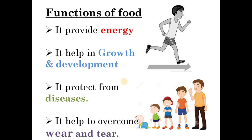Food provides energy to our body. Some food items that we eat — including carbohydrates and fats — provide energy required for various kinds of work and activities. Food also helps in growth and development. Protein helps in growth and development of body cells. Vitamins and minerals protect our body against many diseases. Deficiency of vitamins and minerals leads to deficiency diseases. Food also helps to overcome wear and tear — it helps in repairing damaged cells, replacing worn-out tissue, and healing wounds.